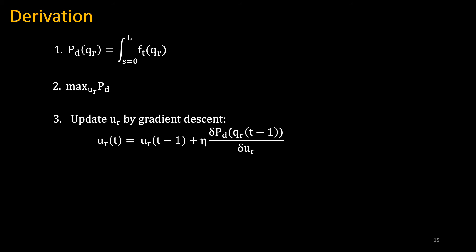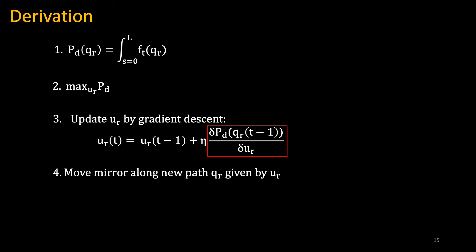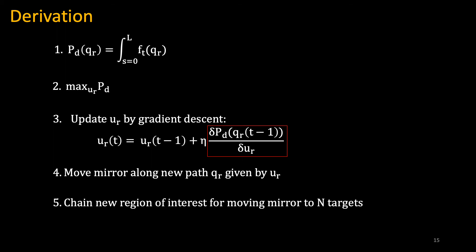We update the control vector by gradient descent. I encourage you to read our supplementary material for how we derive this with respect to the control vector. Once the control vector is optimized, we move the mirror along the new path. We can change to new regions of interest, moving the mirror to as many targets as we want, so our method is not limited to two bivariate Gaussians.